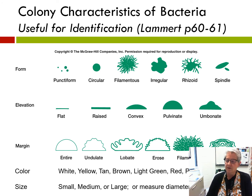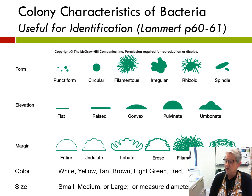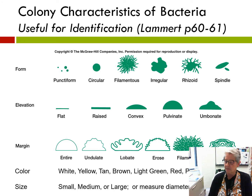Colonies also have different margins, that is the edge of the colony. They can be entire, appearing like a nice circle; undulate, so more uneven; lobate; erose; filamentous; or curled — the curled margin almost looks like the rings on a tree, where the bacteria kind of grows in waves. Then there are different colors and different sizes as well.